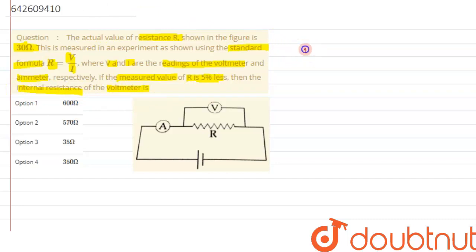So we have been given with the value of resistance, that is actual value, it has been given as 30 ohm. And in the next step it says using this formula the value comes out to be 5% less.